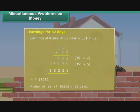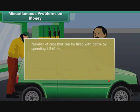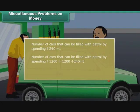It takes 240 rupees to fill a car with petrol. How many cars can be filled with petrol by spending 1,200 rupees? Number of cars that can be filled by spending 240 rupees is 1. Number of cars that can be filled spending 1,200 rupees is 1,200 divided by 240, that is 5. Five cars can be filled with petrol by spending 1,200 rupees.